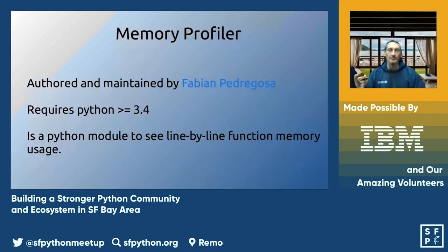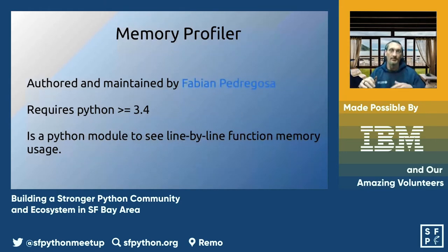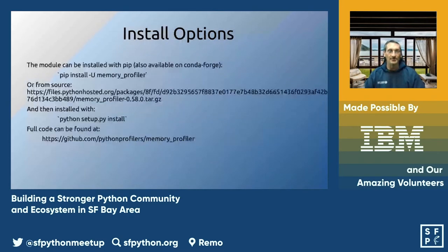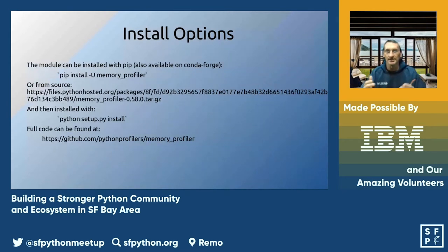It'll show you your line-by-line function memory usage, which I think is really interesting. There's also another package called line_profiler that will give you a lot more detailed information that I can't really go into in five minutes, but you could ask Michael about it. You can pip install memory_profiler, get it directly from tar source, or find it on GitHub.